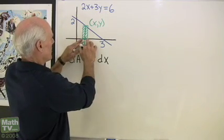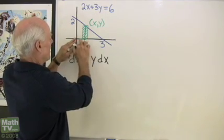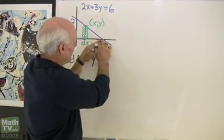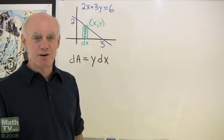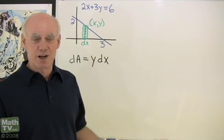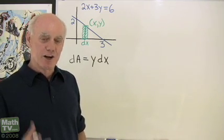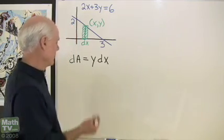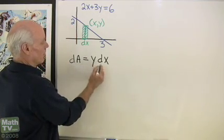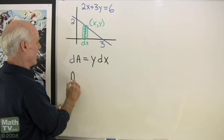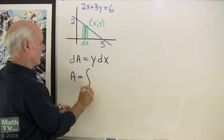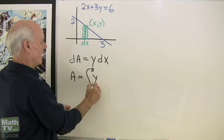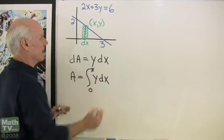What I want to do is take this test rectangle and move it from x equals 0 all the way over to x equals 3, add up all the areas as I go, and I'll have the area under that curve. So if dA is equal to y times dx, that means the actual area A is going to be the integral from 0 to 3 of y times dx.